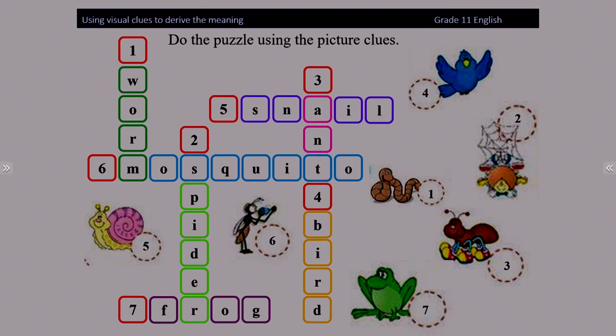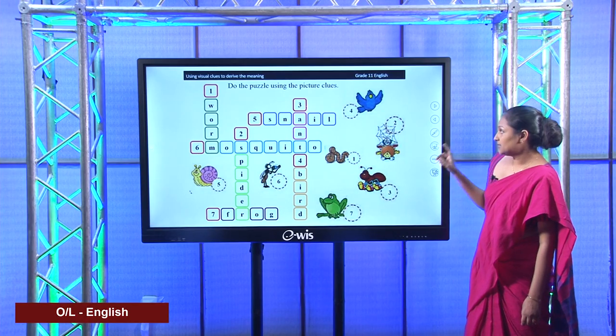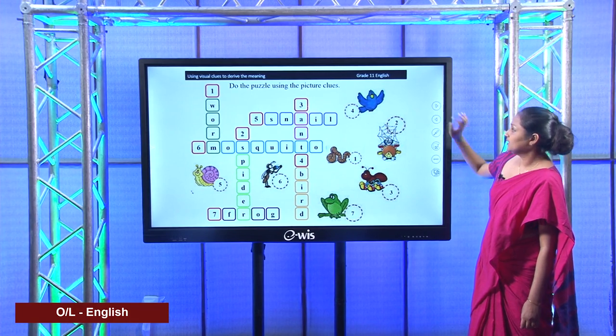Let's check your answers. One: worm. Two: spider. Three: ant. Four: bird. Five: snail. Six — I hope you got the answer — it's mosquito. Seven: frog. Hang on, children — we are going to use the same words for the next activity.